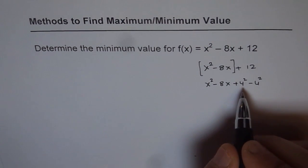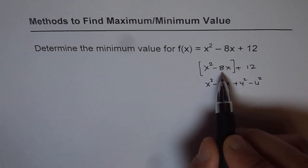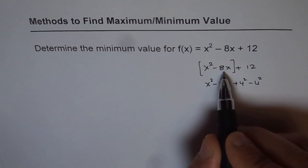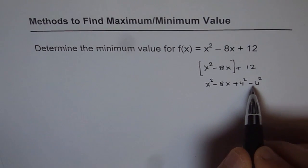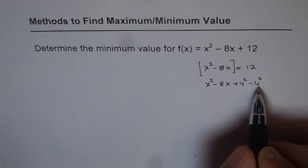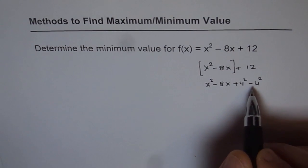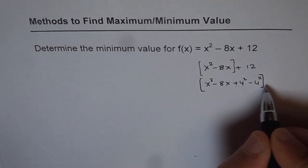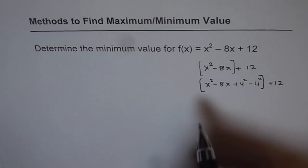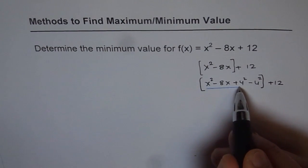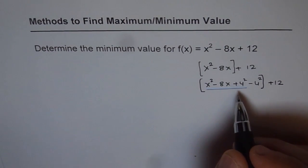What we do here is take half of the coefficient of x and square that number. Half of 8 is 4, and 4 squared is 16, which we add and subtract. When you add and subtract the same number, you are not changing the equation — it is as if you are adding zero. Let's put them in a square bracket and keep 12 on the side. Now you will see that the first three terms, x squared minus 8x plus 4 squared, form a perfect square.